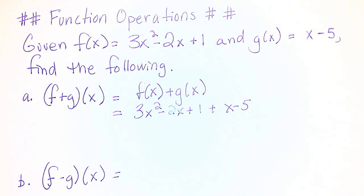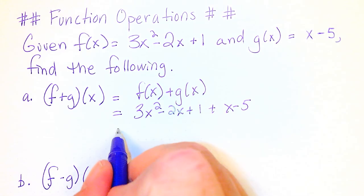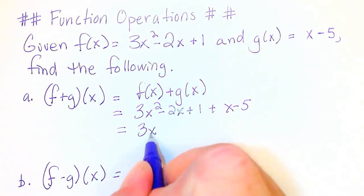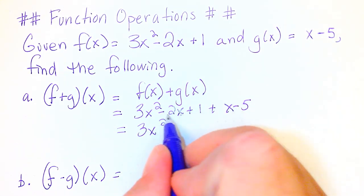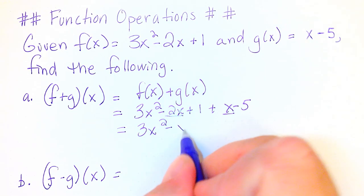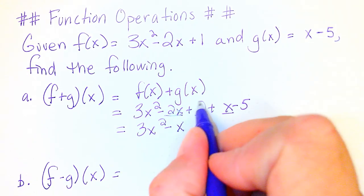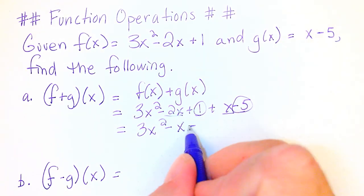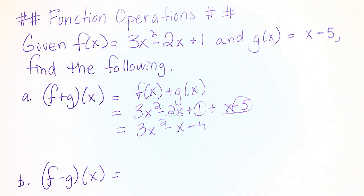So we're going to add these two functions together and we can just add like terms like we would with a long polynomial expression. So here we have 3x² - 2x and x gives me -x, and 1 - 5 is -4. So 3x² - x - 4 is going to be (f + g)(x).